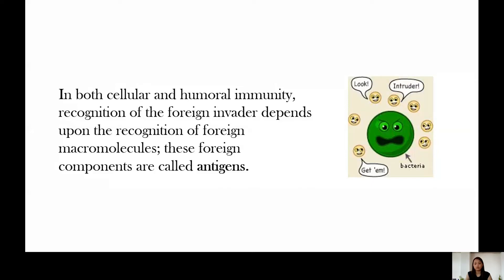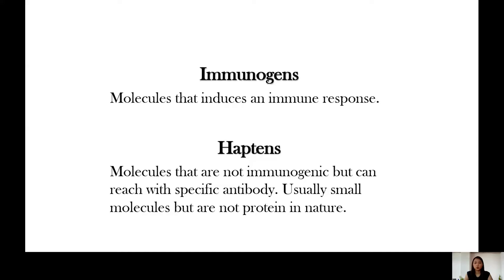In both cellular and humoral immunity, recognition of the foreign invader depends upon the recognition of foreign macromolecules. These foreign components are what we call antigens, and these antigens are what our lymphocytes recognize. When a pathogen or foreign substance enters our body and has an antigen, our lymphocytes recognize it as harmful. Immunogens are molecules that induce an immune response. Haptens are molecules that are not immunogenic but can react with a specific antibody; they are usually small molecules but not protein in nature.